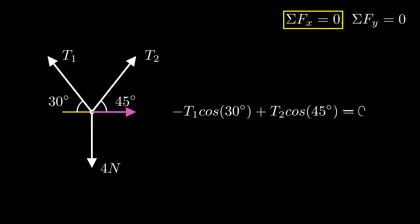Similarly for T2, the x component of the force is T2 times the cosine of 45 degrees. Then the sum of those two forces together must still be equal to zero.